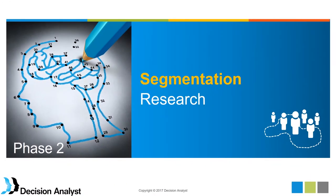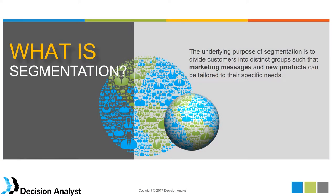Now I'm going to turn the time back over to Beth. Moving on to phase two, we take those rich learnings from phase one and use them to create a solid survey instrument. In this phase, we conduct the actual segmentation research. It is quantitatively oriented. As a refresher, what do we mean by a segmentation? The overarching goals are to develop distinct consumer groups so that we can market to them effectively and also for new product development.